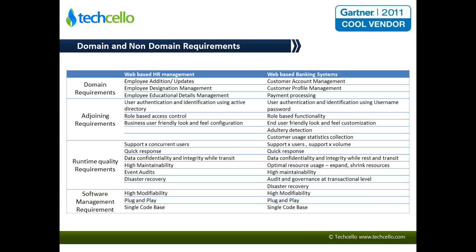For the adjoining requirements, these are features that help in governing the core features themselves. These features may not directly address the core business problem covered by domain requirements, but they are auxiliary features which help in governing and managing those domain requirements. A good example could be user management and role-based access control features.